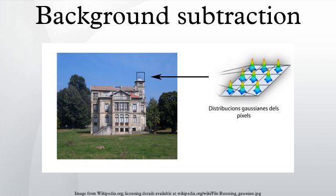Two cases can occur. Case 1: a match is found with one of the k Gaussians, and the update is performed for the matched component. Case 2: no match is found with any of the Gaussians — in this case, the least probable distribution is replaced with a new one with new parameters. Once the parameter maintenance is made, foreground detection can be performed, and so on.